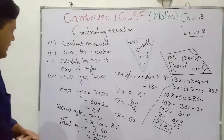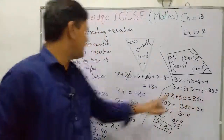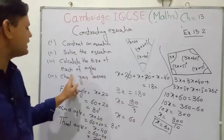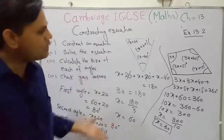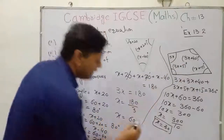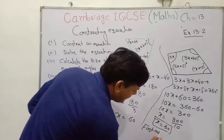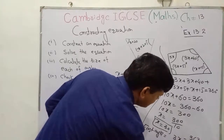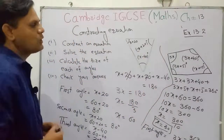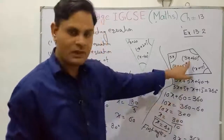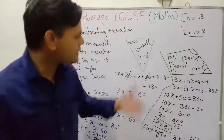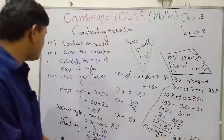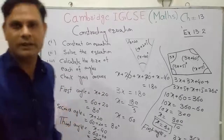You have done step one — construct the equation — and step two — solve the equation. Now step three: calculate the size of each angle. The first angle is 3x, so substituting x = 30: 3 × 30 = 90°. You can calculate the second, third, and fourth angles similarly by putting in the value of x. Finally, add all the angles — if the sum equals 360° then your check is done. Thank you so much.